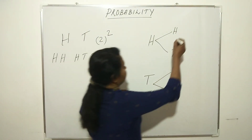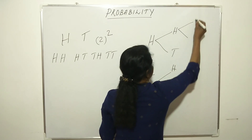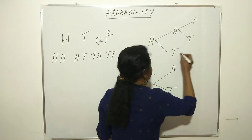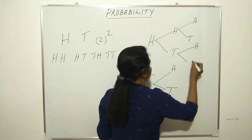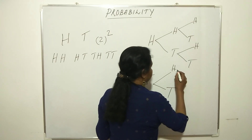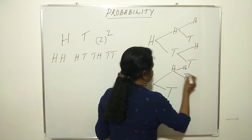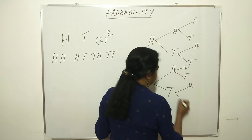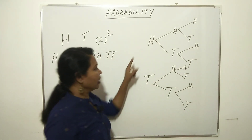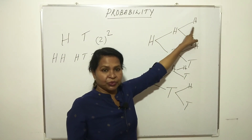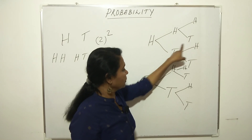The 8 outcomes for three coin tosses are: H-H-H, H-H-T, H-T-H, H-T-T, T-H-H, T-H-T, T-T-H, T-T-T. This gives us all 8 outcomes in the sample space.